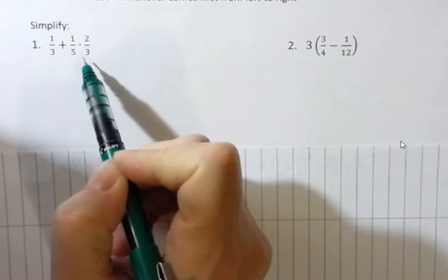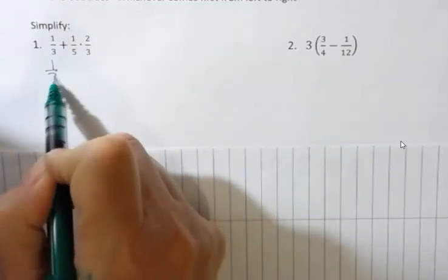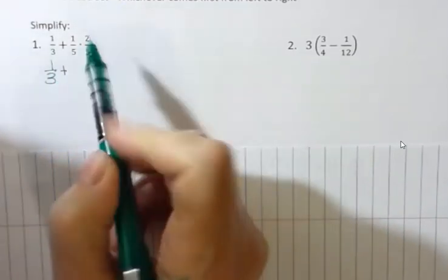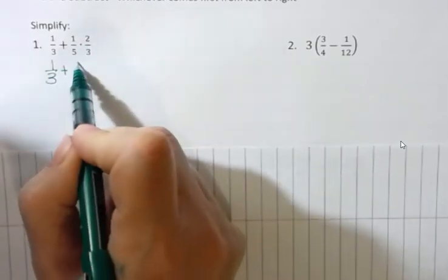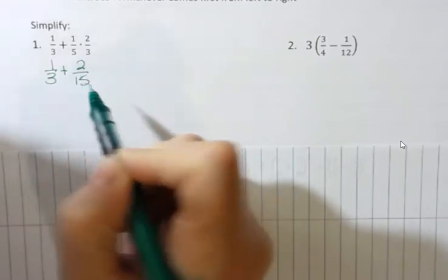So when I look at this first problem, I have an addition and I have a multiplication. I'm always going to do the multiplication before I do the addition. So I'm just going to write one-third plus, and now I'm going to take care of this. There's nothing to cross cancel. I'm just going to multiply straight across. One times two is two. Three times five is fifteen.